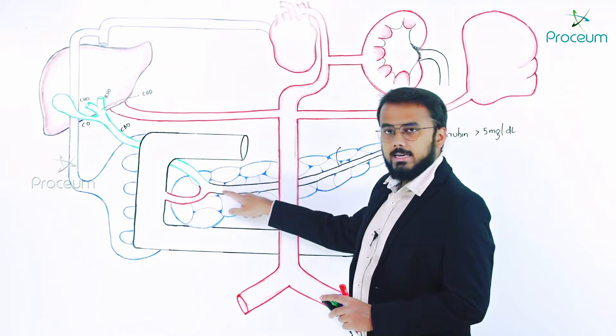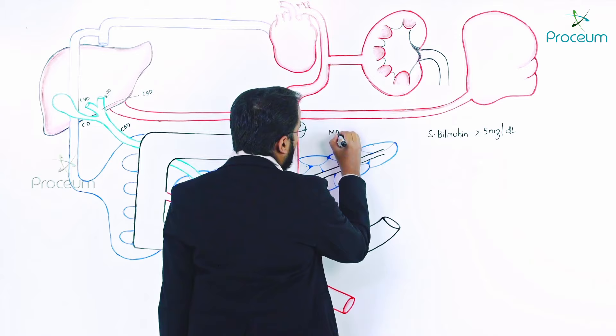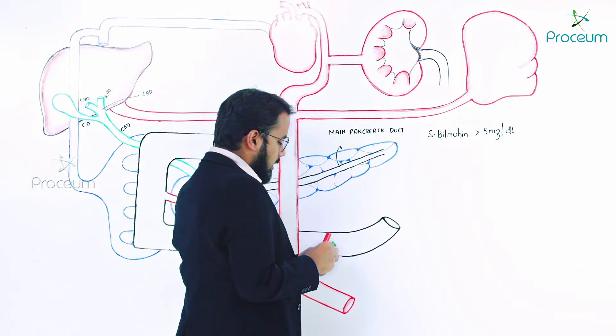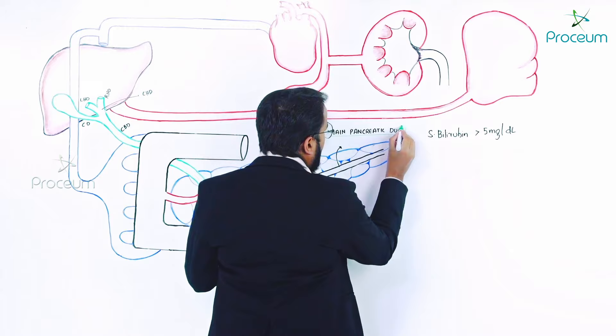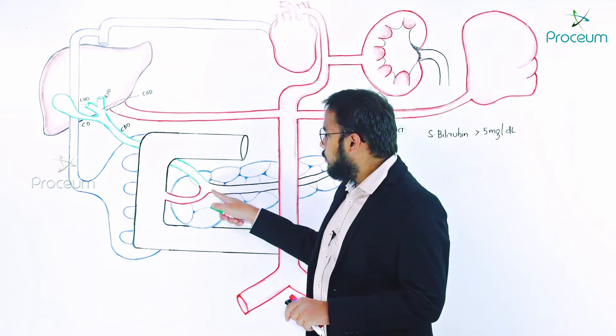The main pancreatic duct is joining with the common bile duct. The main pancreatic duct fuses with the common bile duct to form another duct.